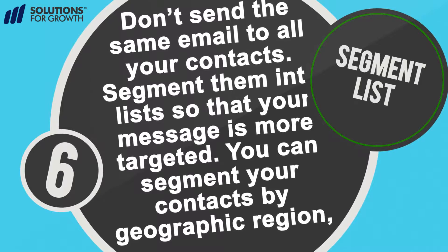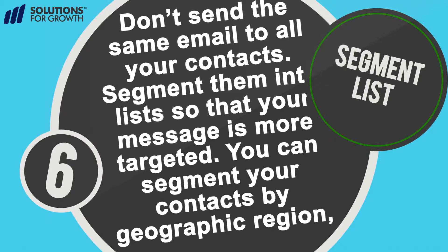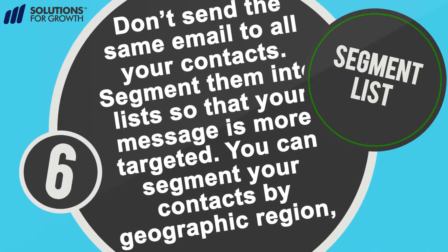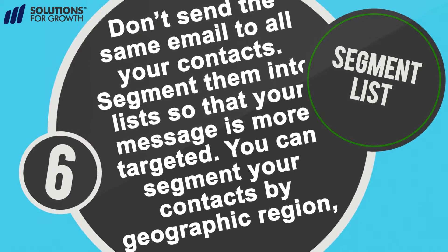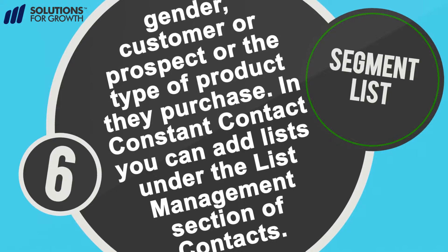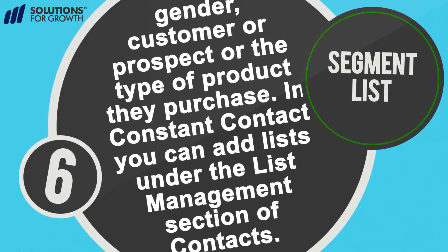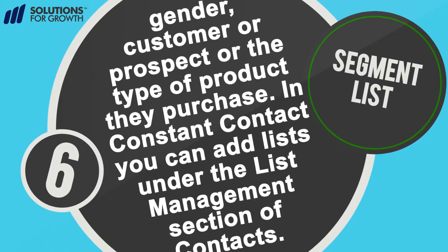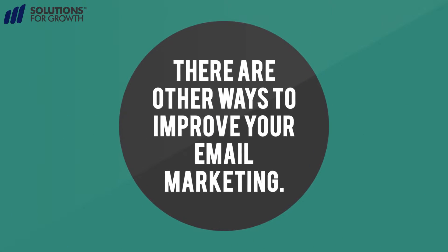Number six: segment your lists. Don't send the same email to all your contacts — segment them into lists so that your message is more targeted. You can segment your contacts by geographic region, gender, customer or prospect, or the type of product they purchase. In Constant Contact, you can add lists under the List Management section of Contacts.